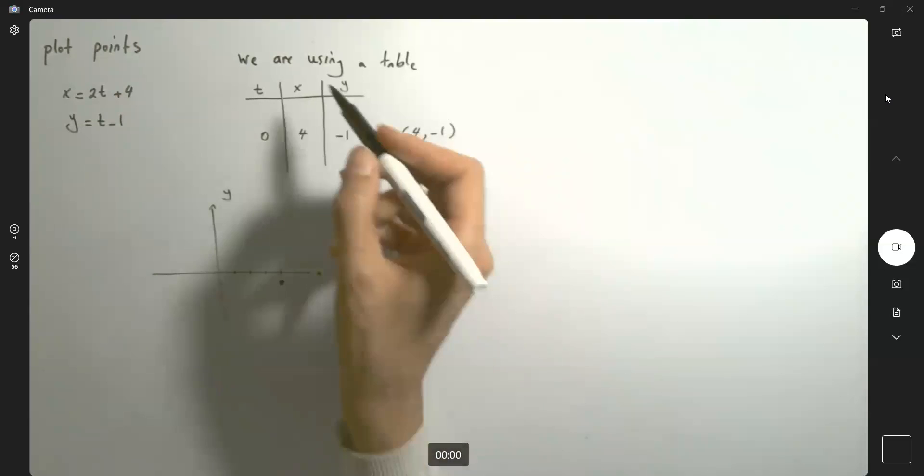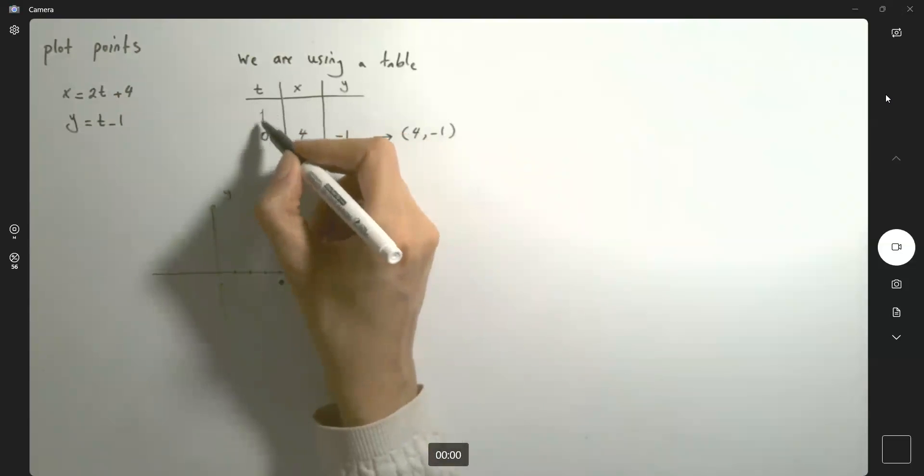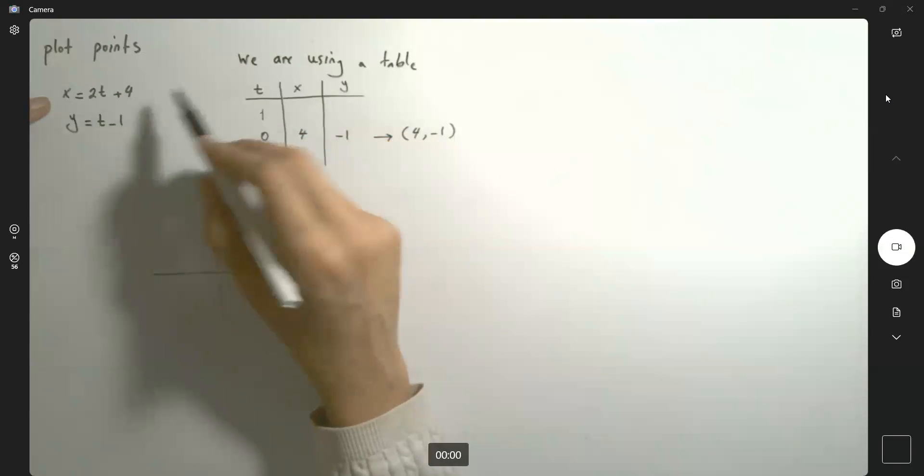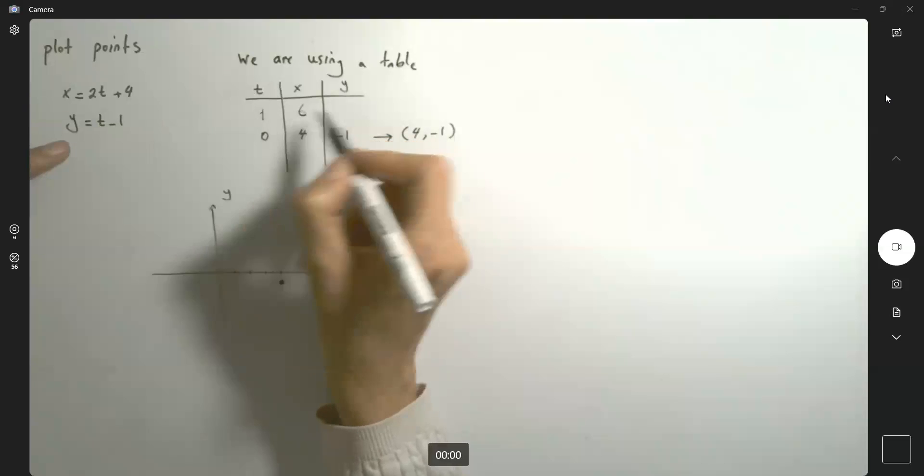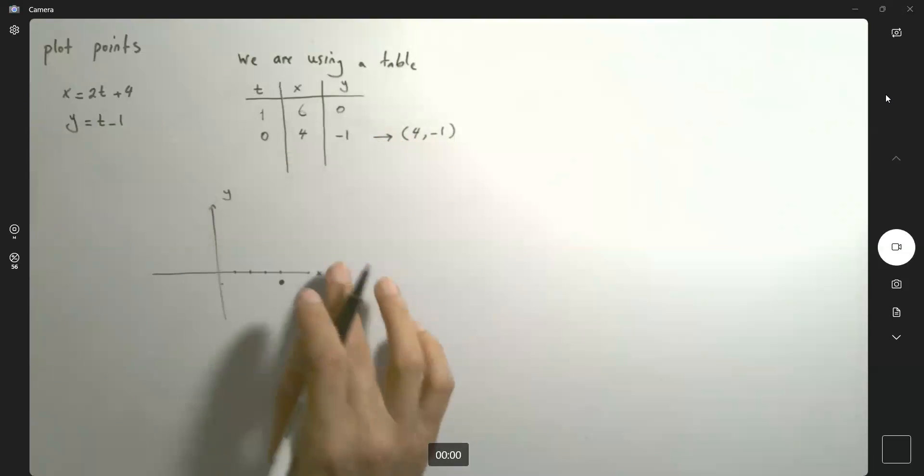Suppose I plug in another t value like 1. If t is equal to 1, my x becomes 6 and my y becomes 0. So 6 and 0. Let me continue - five and six, six and 0.